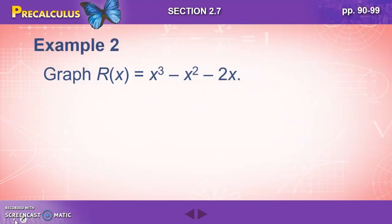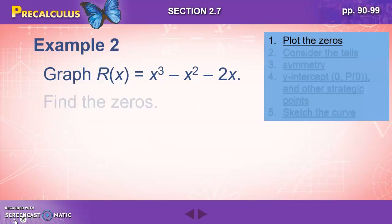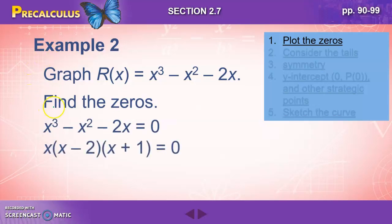So let's go through these five steps with this function. The first thing we're going to do is plot the zeros. And we do that by factoring for x and setting each of our x's to zero. We can factor out an x, which leaves us with x squared minus x minus two. And then we can further factor our x squared minus x minus two into x minus two and x plus one. When we set each of those equal to zero, we get x equals zero, x equals two, or x equals negative one. Those three points will give us a zero where it touches or crosses the x-axis.